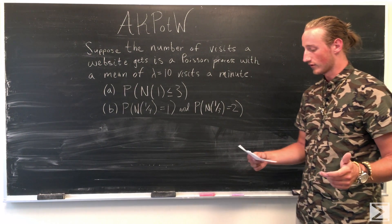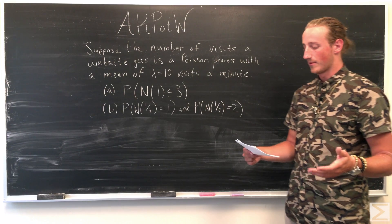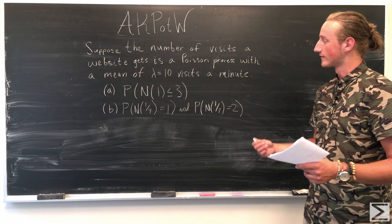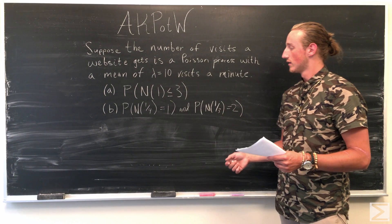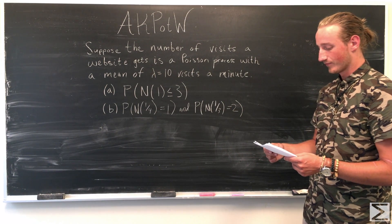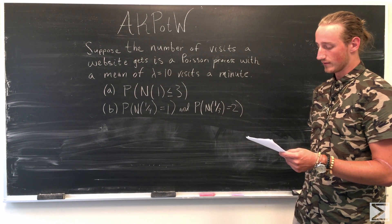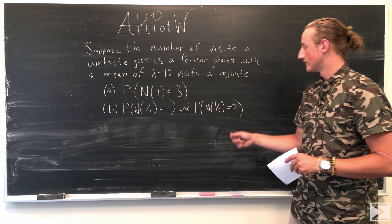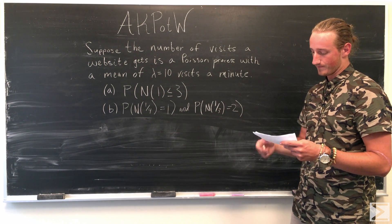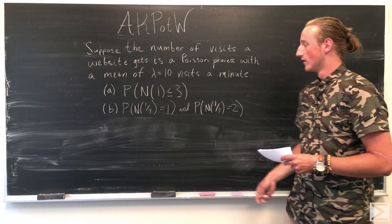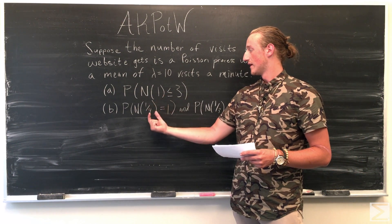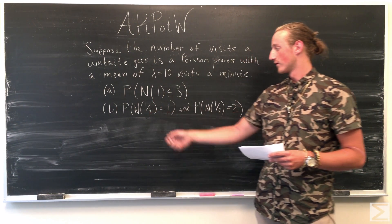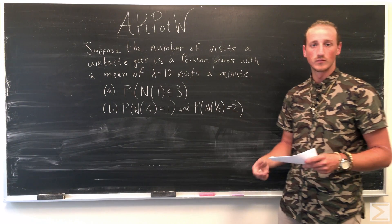Part A asks for finding the probability that there are less than three visits in the next minute, and Part B asks to find the probability that there is one call in the next 15 seconds and two calls in the next 20 seconds after that. We're going to use minutes as our time unit, so 15 seconds is a quarter of a minute and 20 seconds is one-third of a minute.